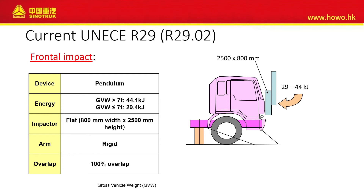Let's look at the first test, which is the frontal impact. A pendulum is used to push from the front of the truck to produce a shock to the cab. After this crash, we measure the space left for the occupant — the driver — and estimate if there is any survival space. This is the energy used for a heavy duty truck, which has a gross vehicle weight of more than 14 tons, expressed in kilojoules.